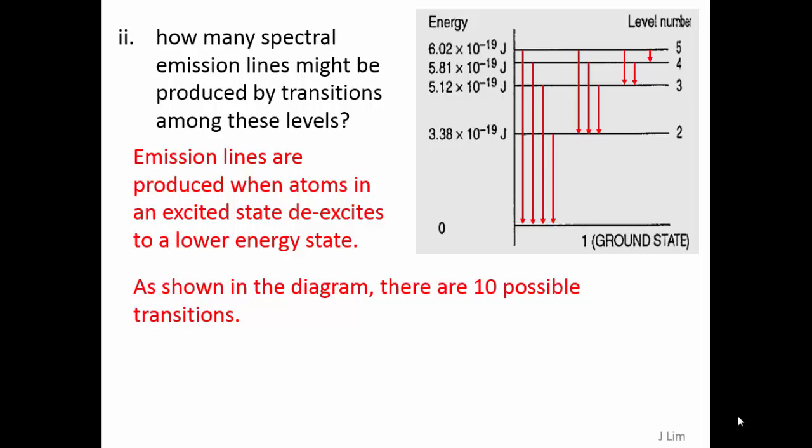Emission lines are produced when atoms in an excited state de-excite to a lower energy state. As shown in the diagram, there are 10 possible transitions.